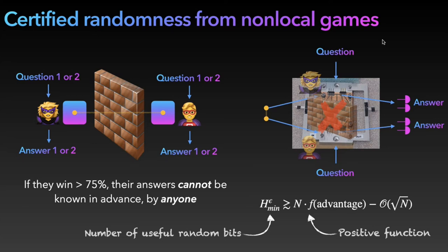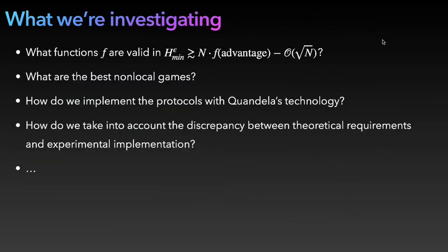I will conclude with the kind of questions we look into. For instance, what kind of functions can we put in this mean entropy bound? How can we prove that a given function is a valid bound? What are the best non-local games we can use? I explained the CHSH game, but there are many others. How do we implement such a protocol with the technology we have in Candela? And how do we take into account discrepancies between theoretical requirements and experimental implementation? For instance, the fact that we should have a wall between Alice and Bob but we actually don't have it.